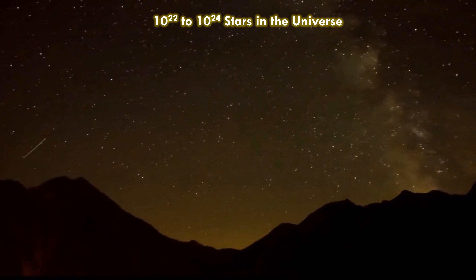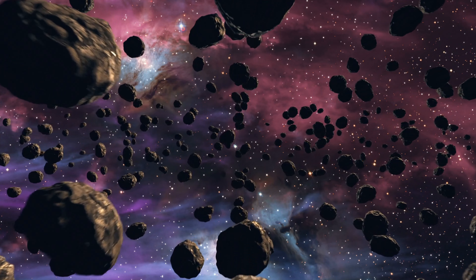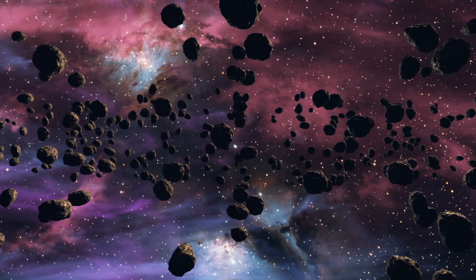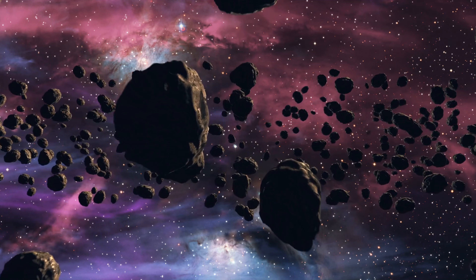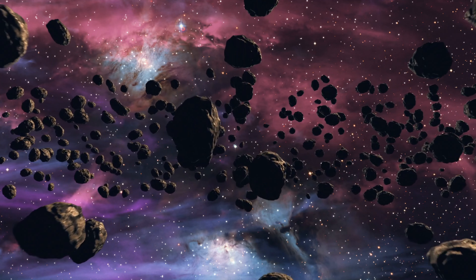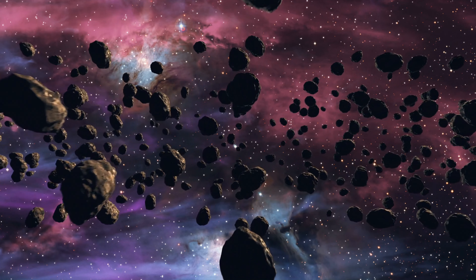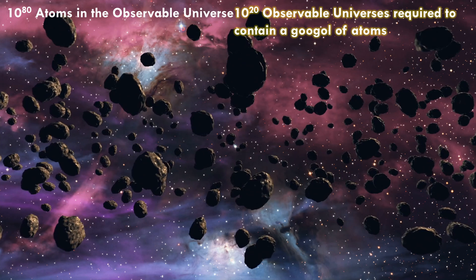Let's move on to the number of atoms in the universe. Looks like this is definitely going to make a Googol, isn't it? Arthur Eddington in 1940 calculated the number of atoms in the observable universe. He calculated it to be 1.57 times 10 to the power 79, which is currently estimated to be 10 to the power 80 and generally accepted. This number is also known as the Eddington number. With this calculation, another 10 to the power 20 observable universes would be needed to contain a Googol of atoms.